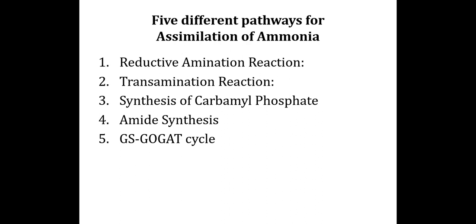The ammonia assimilation takes place by five different pathways: reductive amination reaction, transamination reaction, synthesis of carbamyl phosphate, amide synthesis, and the GS-GOGAT cycle.